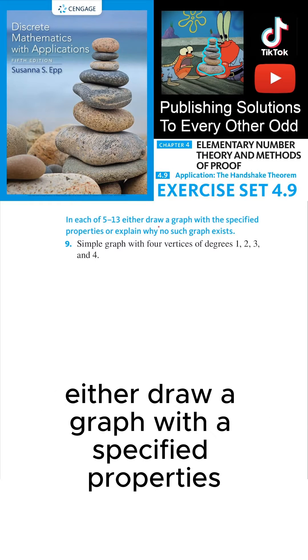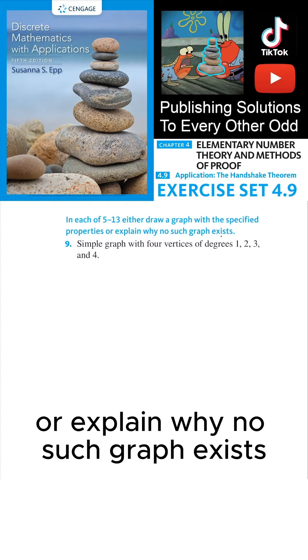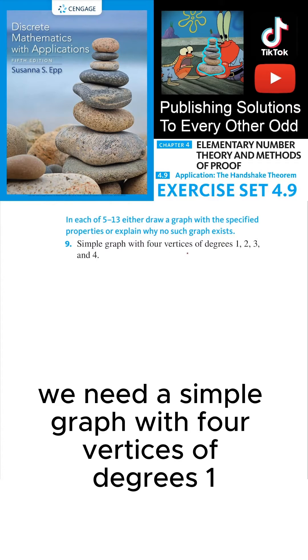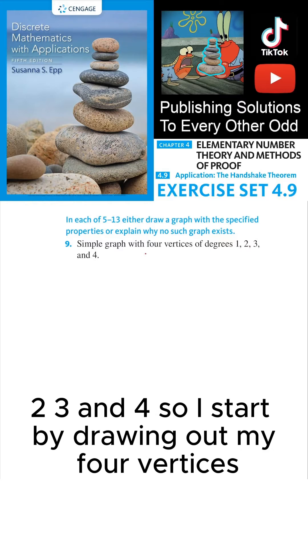In each of 5 through 13, either draw a graph with the specified properties or explain why no such graph exists. We need a simple graph with four vertices of degrees 1, 2, 3, and 4.